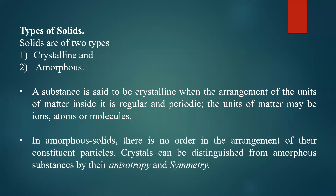In amorphous solids, there is no order in the arrangement of their constituent particles — no regular pattern. They are smooth, in the form of nice powders. A simple example is talcum powder, which is an amorphous solid. There is no regular arrangement; you cannot find a definite shape of the particles. They are in powdered form with no perfect order.